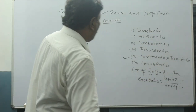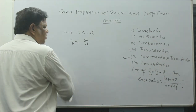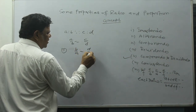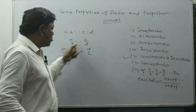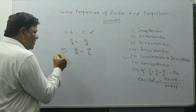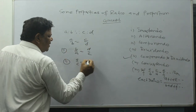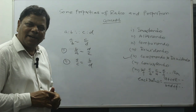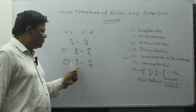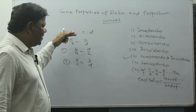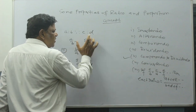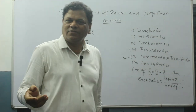The second property is Alternendo. Alternendo means we can change in a crosswise way — that means b and c swap positions. So from a/b = c/d, we get a/c = b/d. When you cross multiply, ad = bc is the same in all cases. So if you do a crosswise change, that is called Alternendo. Very easy.